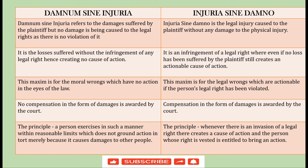Now that we have read both maxims — damnum sine injuria and injuria sine damno — let us understand the differences. Damnum sine injuria refers to damages suffered by the plaintiff but no legal right being violated — there is no violation of any legal right. In injuria sine damno, there is a legal injury caused to the plaintiff without any damage, that is without any physical injury. Damnum sine injuria refers to losses suffered without the infringement of any legal right, hence creating no cause of action.